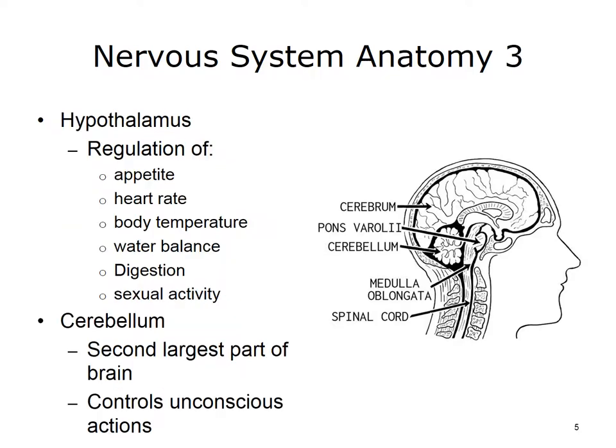The hypothalamus assists in the regulation of appetite, heart rate, body temperature, water balance, digestion, and sexual activity. It is located beneath the cerebral hemispheres. The cerebellum is the second largest part of the brain. It helps coordinate movement, including balance and muscle coordination.